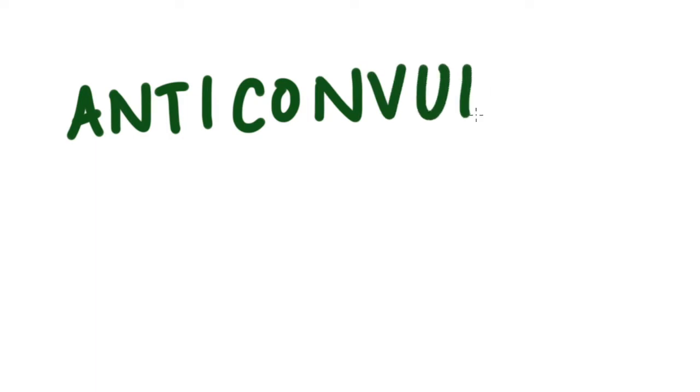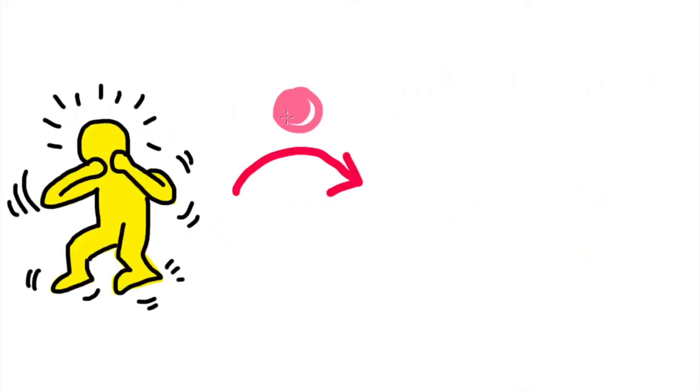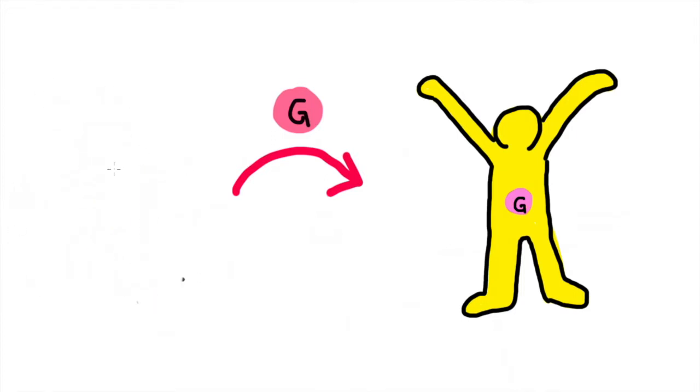Gabapentin was developed as an anticonvulsant, which means it's used to treat seizures. It inhibits the uncontrollable firing of neurons, relieving the seizure symptoms. However, since its FDA approval, gabapentin has also been used as an off-label drug for other diseases.